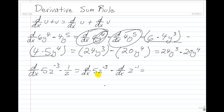Now let's find the derivative of our first function. We take the 5 outside and multiply it times the derivative of z to the negative 3rd, and we get negative 3 times z to the negative 4. Then we subtract the derivative of the second function, which is equal to negative 1 times z to the negative 2.